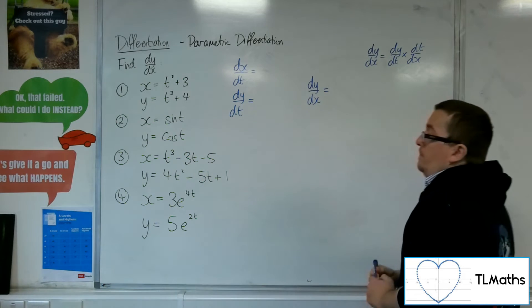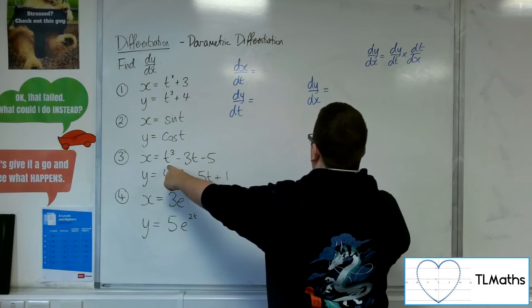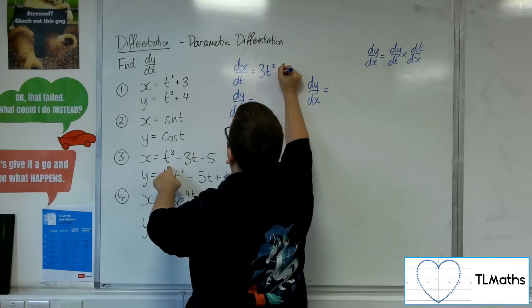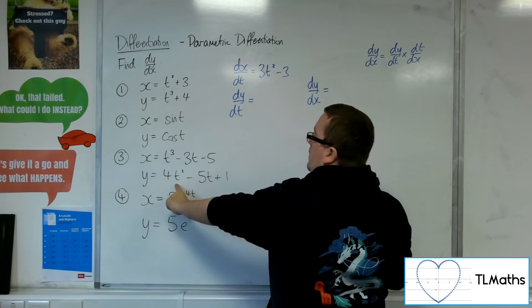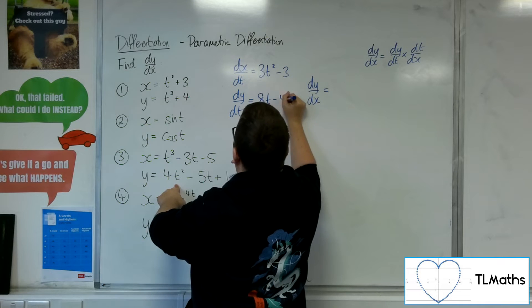Number 3, we've got x equals t cubed minus 3t minus 5. So dx by dt is 3t squared minus 3. And y is equal to 4t squared minus 5t. So dy by dt is 8t minus 5.